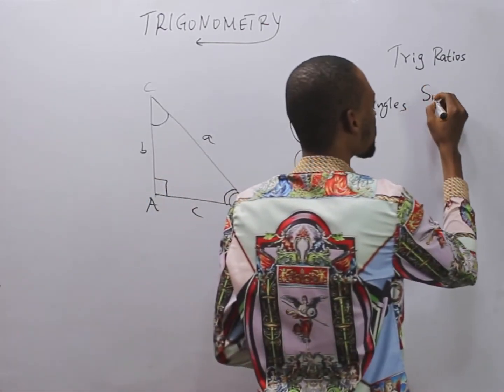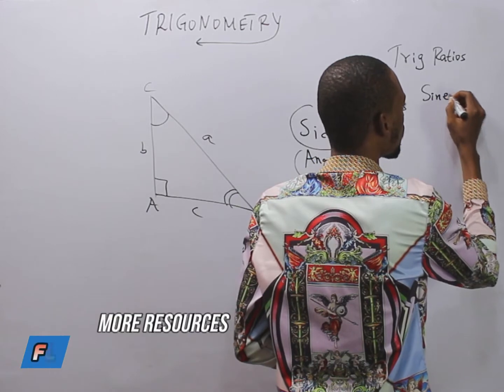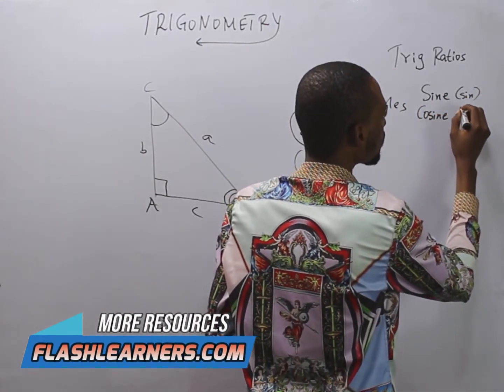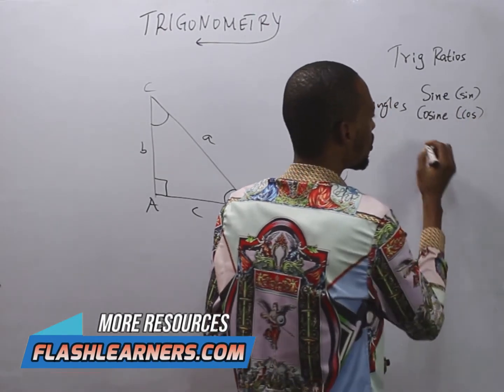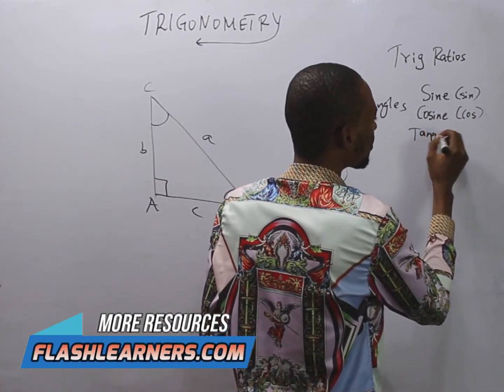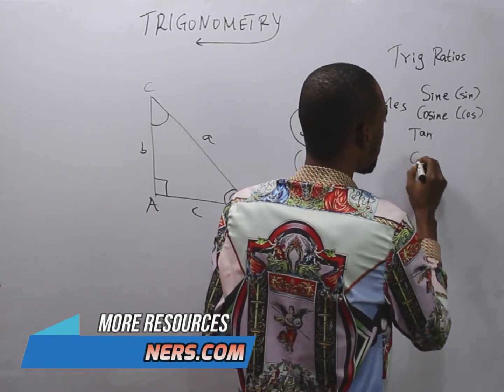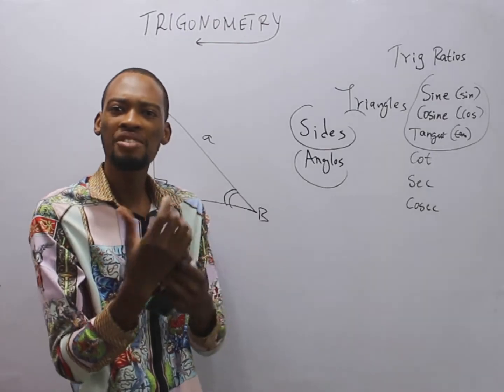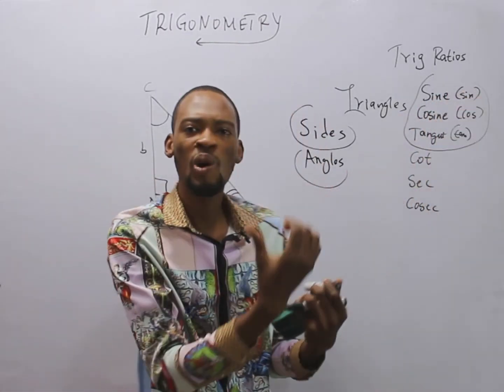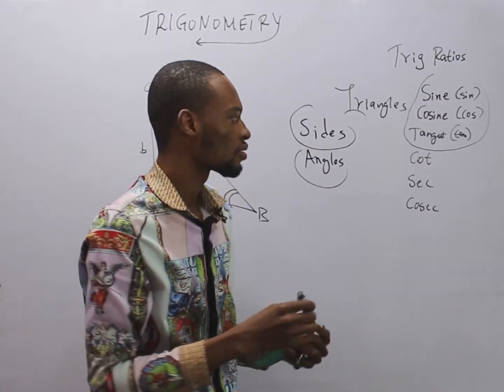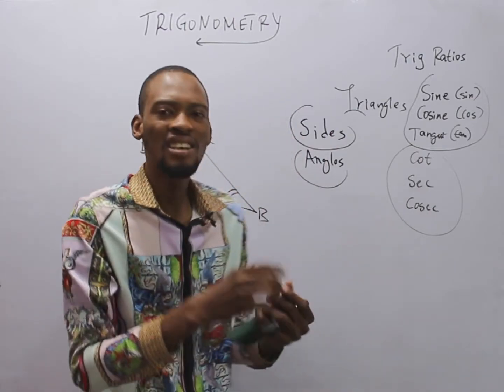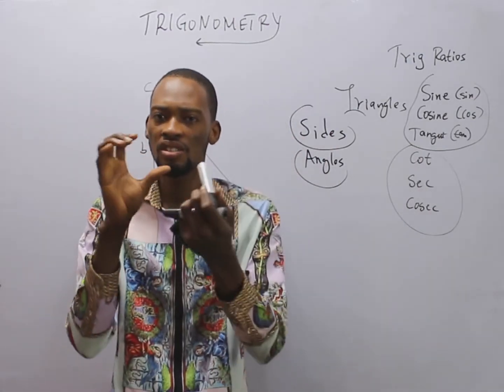The first one is sine, S-I-N. We have cosine or you can simply say cos. We have tangent or simply say tan. We have cot, we have sec, and we have cosec. The three most popular trig ratios are sine, cos, and tan, while these other three are referred to as reciprocal trig ratios.